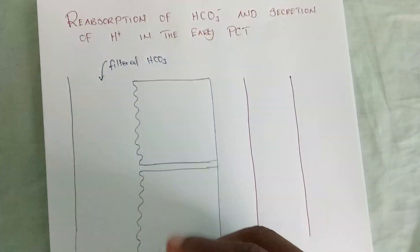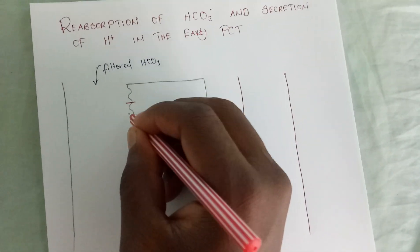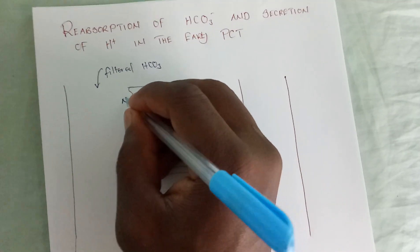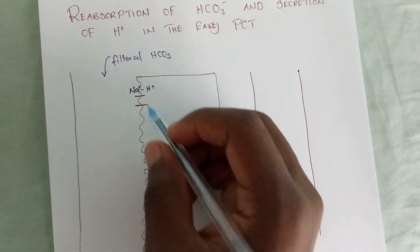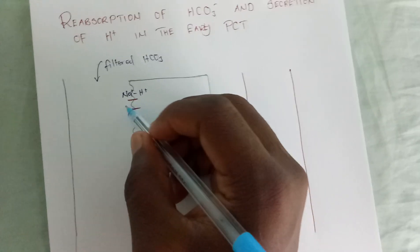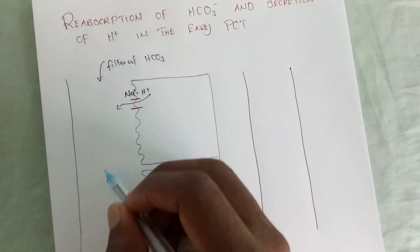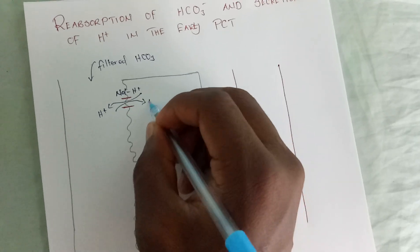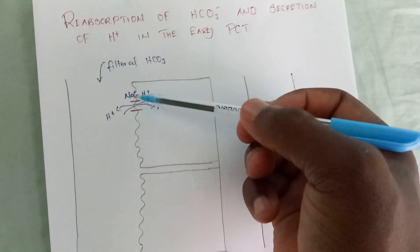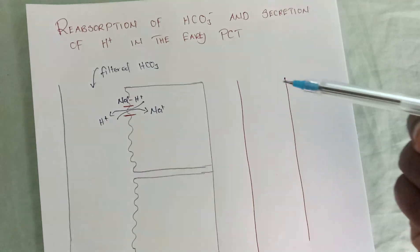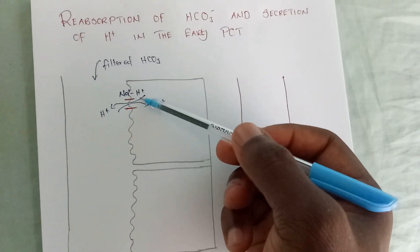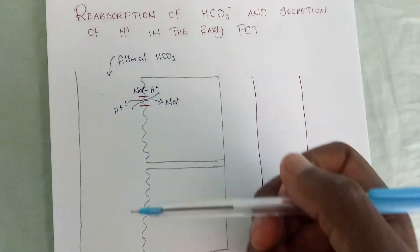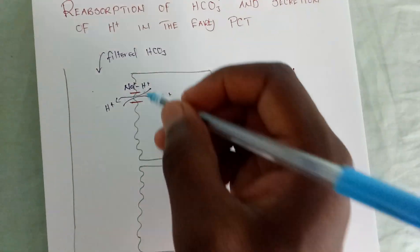On the luminal side, we have a channel known as the sodium-hydrogen exchanger. What happens is that it will exchange sodium for hydrogen — hydrogens are pushed into the lumen and sodium moves into the cell, moving along its concentration gradient. This creates energy for hydrogens to be pushed out from the cell into the lumen, making this a type of secondary active transport.